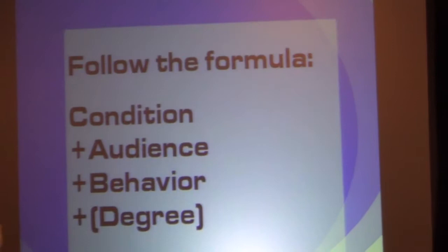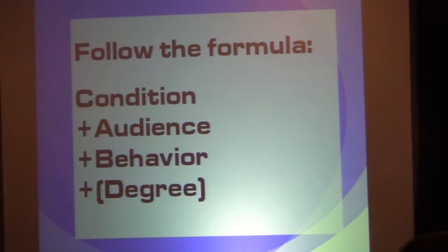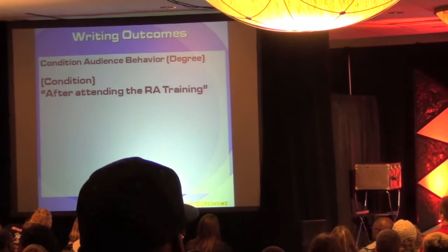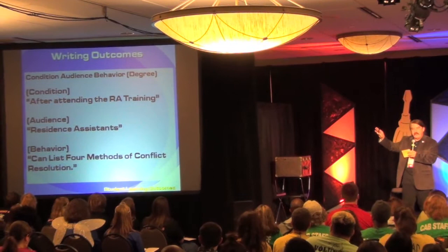It goes together like this — here's the formula: condition plus audience plus behavior. This is your learning outcome. Degree is in parentheses because we don't always use degree. For example, after attending the RA training, resident assistants can list four methods of conflict resolution. See how clear that is? Condition: attending the RA training. Audience: resident assistants. Behavior: can list four methods of conflict resolution.